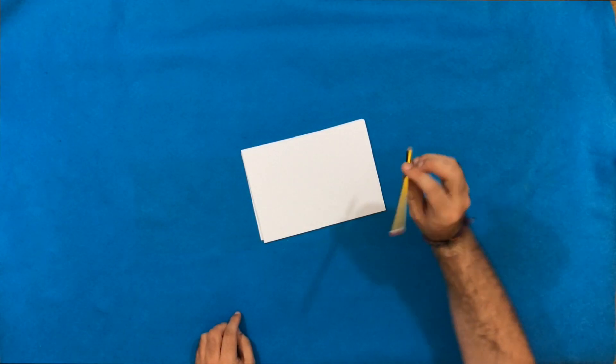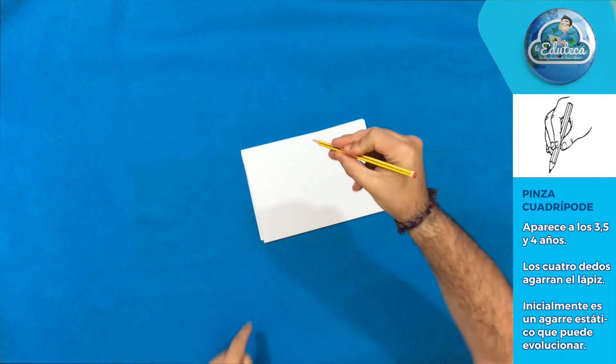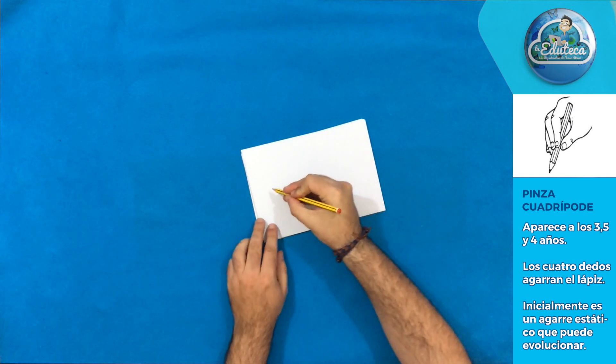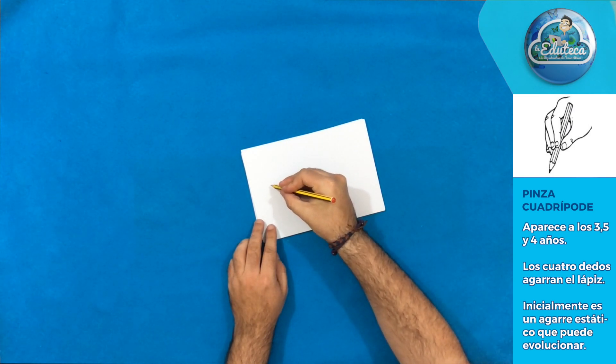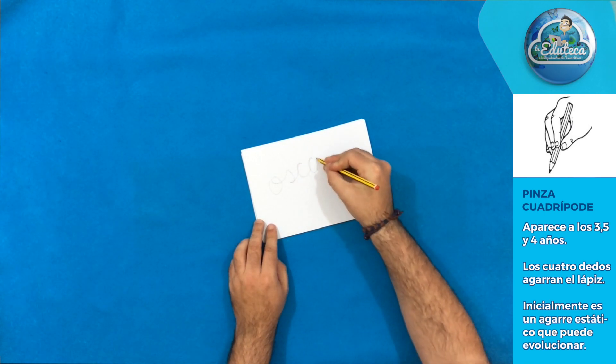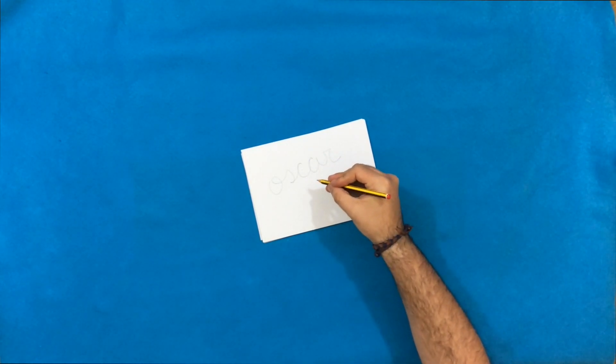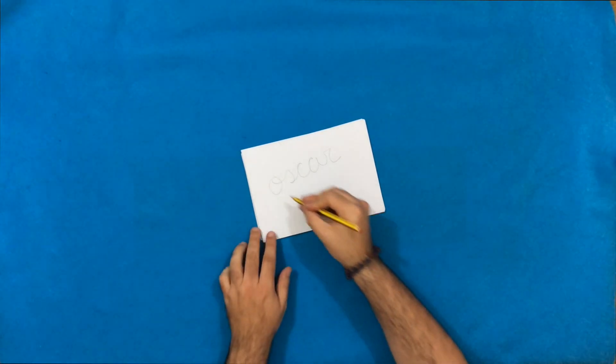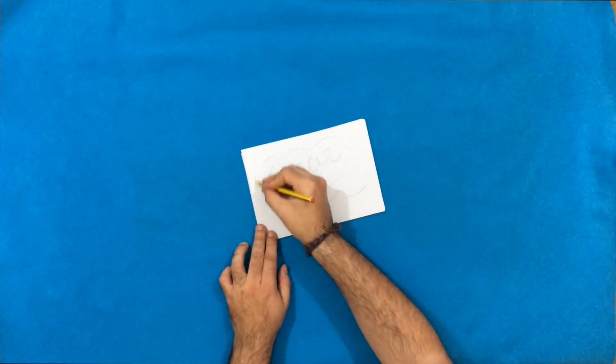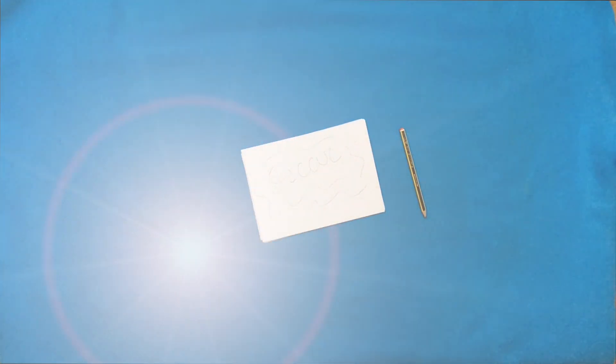Seguimos con la siguiente fase que ya es la pinza cuadrípode. La pinza cuadrípode aparece entre los 3 años y medio aproximadamente y los 4 años y participan ya los 4 dedos en el agarre del útil. Ahora el movimiento va a venir de la muñeca y de la mano y hay como veis una mayor estabilidad en el hombro y en el codo. Inicialmente va a ser un agarre más estático aunque va a ir evolucionando para irse convirtiendo en un agarre dinámico.